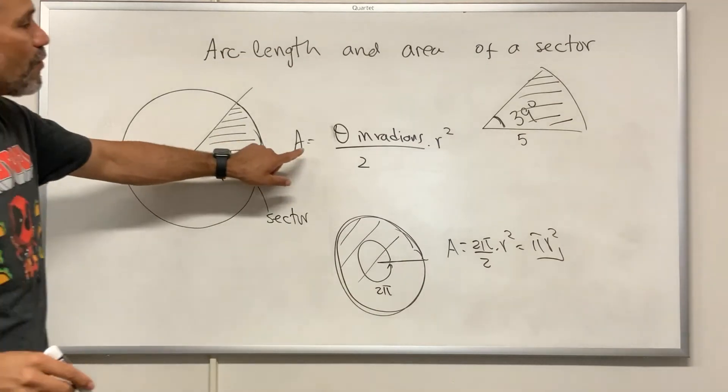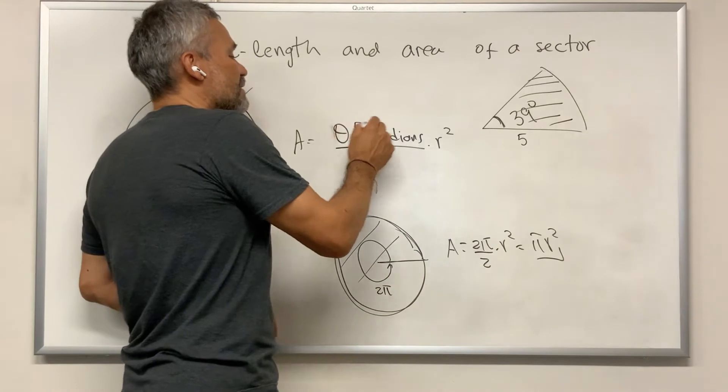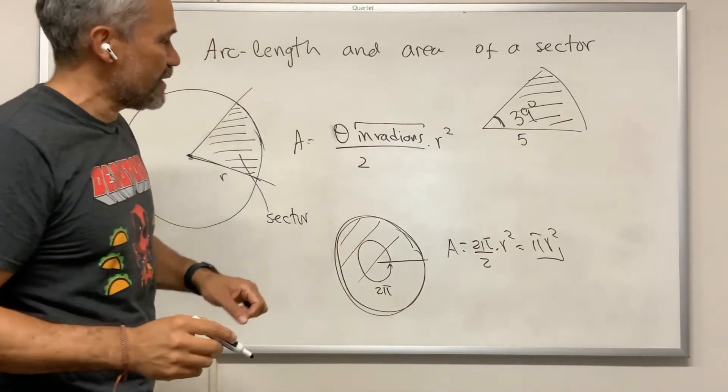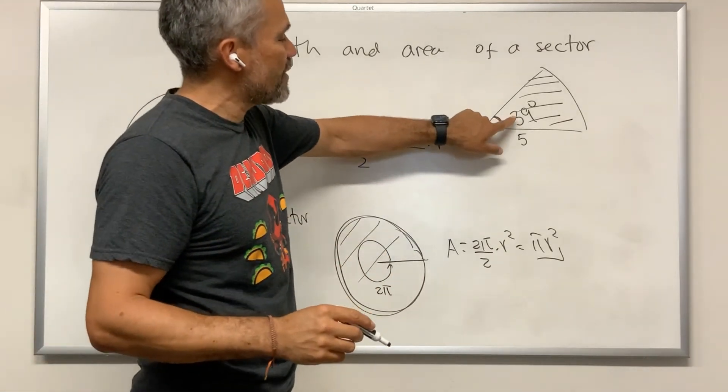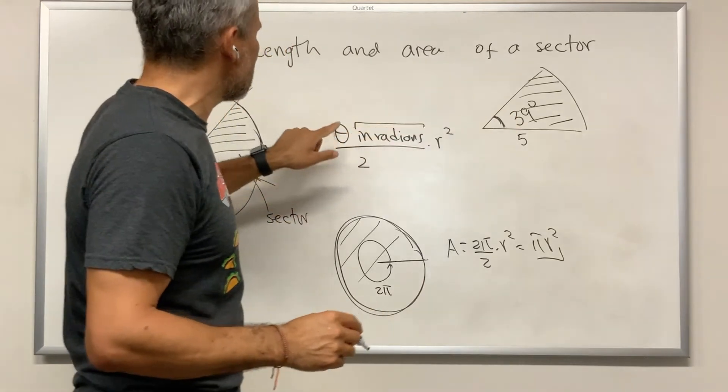According to this formula, we need to multiply the angle, but we have to be careful that that angle has to be in radians. The notion of degrees, geometrically, it doesn't have any meaning. Radians have a meaning.